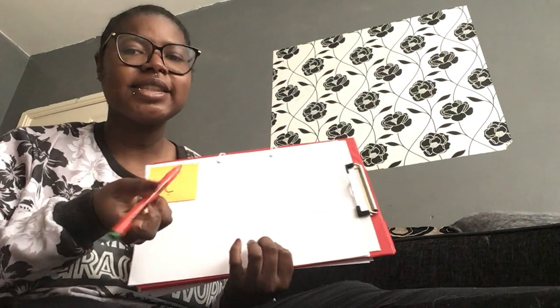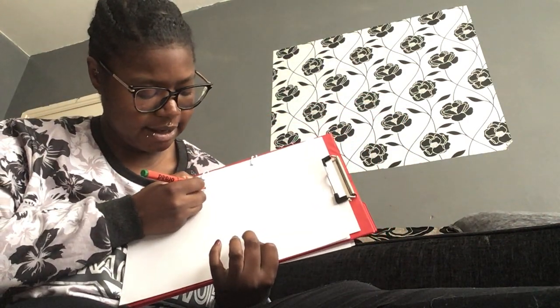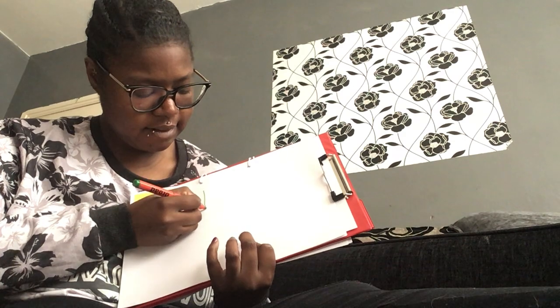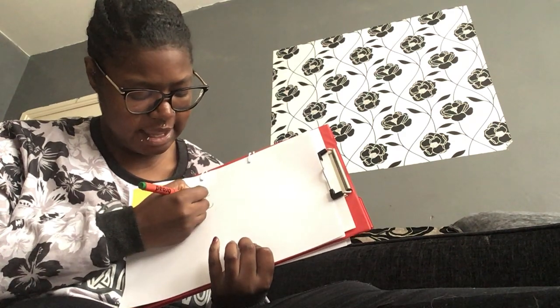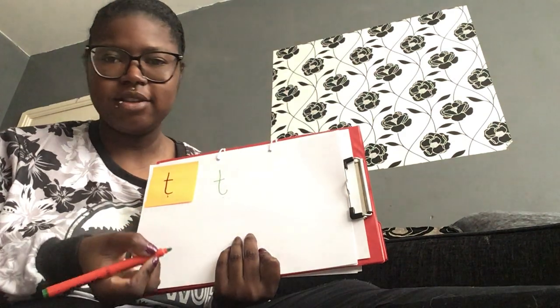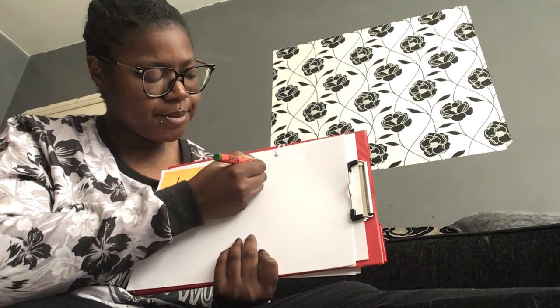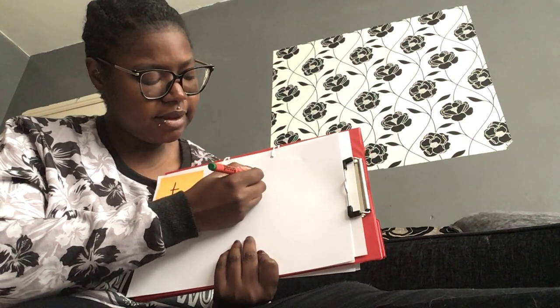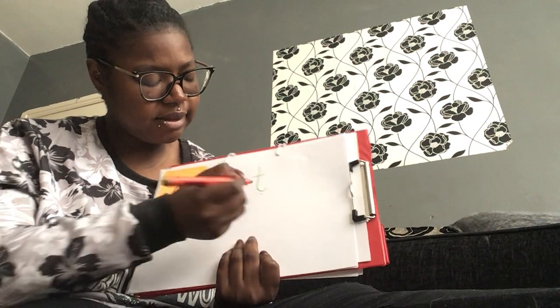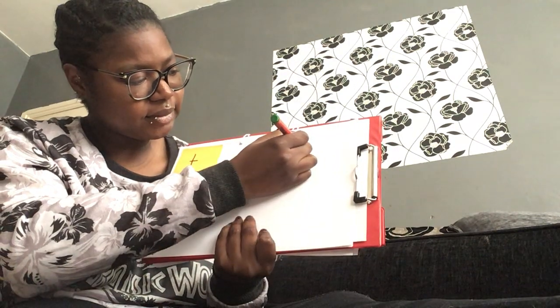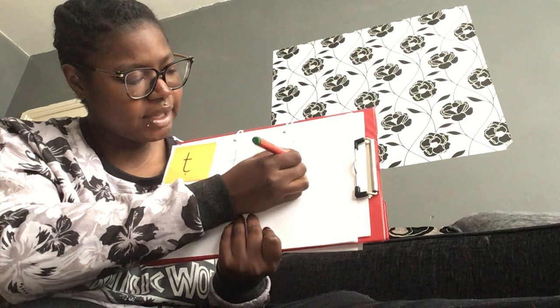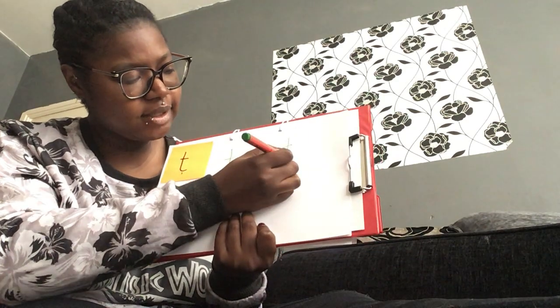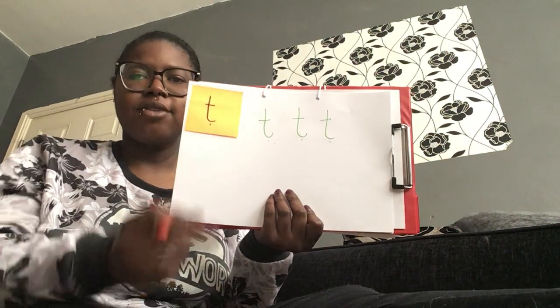Can we remember how to write our t's? Let's see. We're going to go down, flick at the bottom, line across the middle, and sound button on the bottom. Shall we do that again? Down, flick at the bottom, line across. Down, flick at the bottom, line across. There we go.